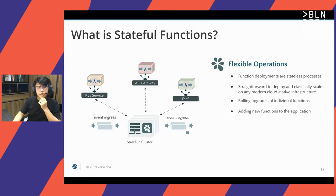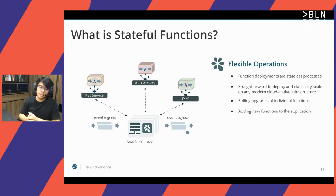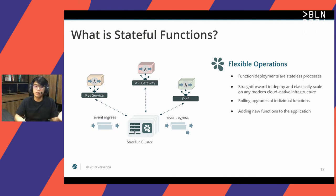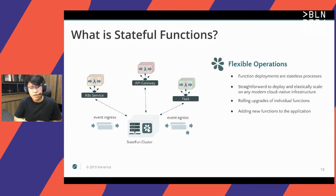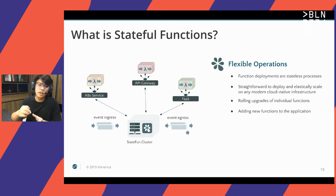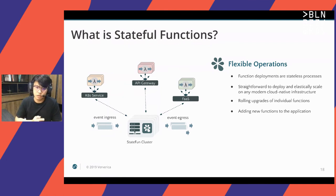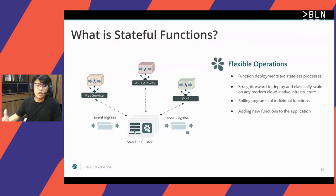Operation-wise the functions are stateless, so operation is very flexible. Function deployments are stateless processes, making it straightforward to deploy and elastically scale them on any modern cloud-native infrastructure like Kubernetes, API gateways, or a popular function service like AWS Lambda. It's super easy to do rolling upgrades of individual functions and also to add new functions to the application without any downtime with the stateful functions cluster. You still retain the benefits of stateless deployments, but with the stateful functions cluster, having stateful logic is much easier to maintain.